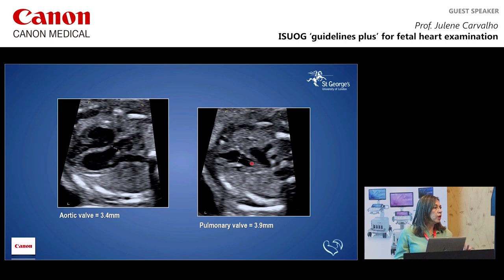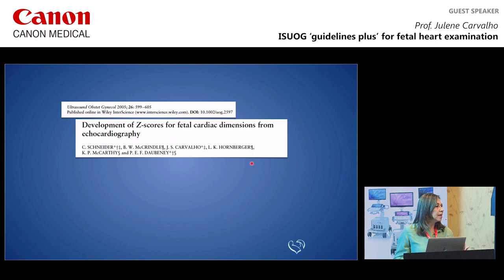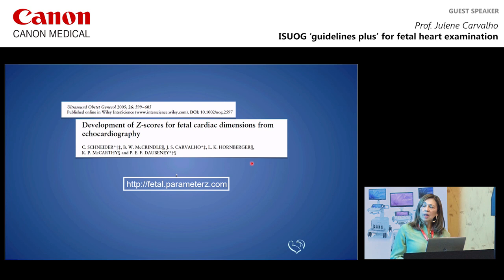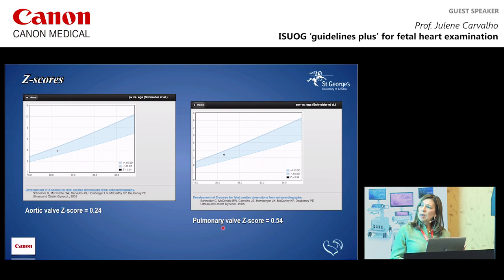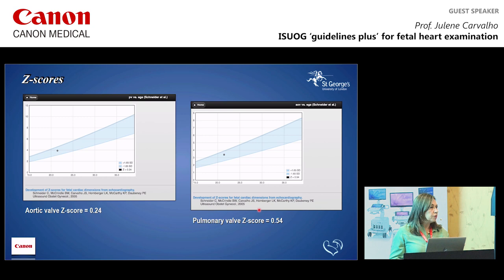I measure in diastole when the valve is closed — the aortic valve measuring 3.4 mm and the pulmonary valve 3.9 mm at around 20 weeks gestation. If you use viewpoint, there's a centile chart available. You're also familiar with Z-scores — the first Z-score for fetal measurements is available on a dedicated website. Graphs generated from that site show Z-scores of 0.24 for the aortic valve and 0.54 for the pulmonary valve, both within the normal range.